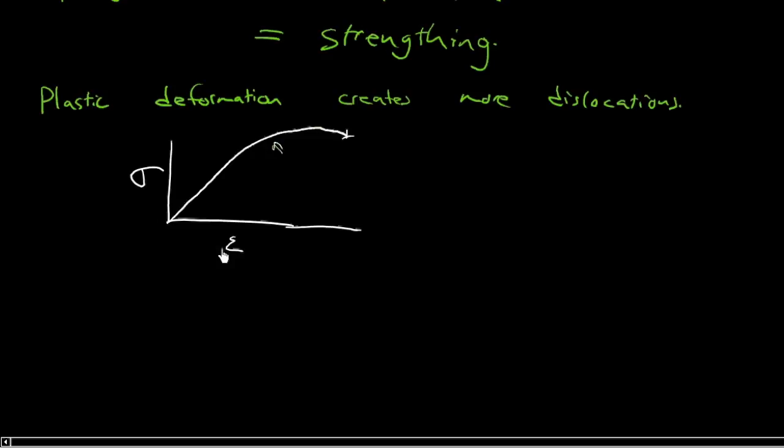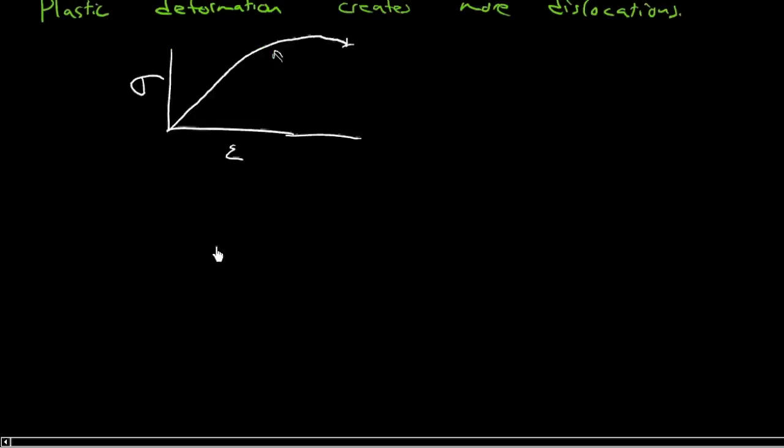And finally, just to give you a sense for how really incredibly important dislocations are, if you imagine that you took a piece of metal, you cut it up. You imagine you recorded, say you had one millimeter by one millimeter area.